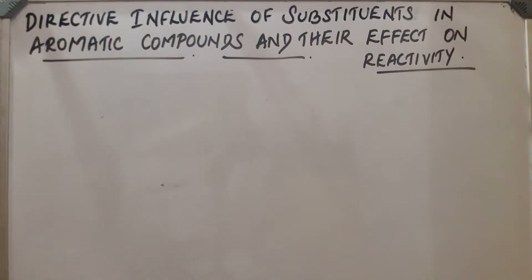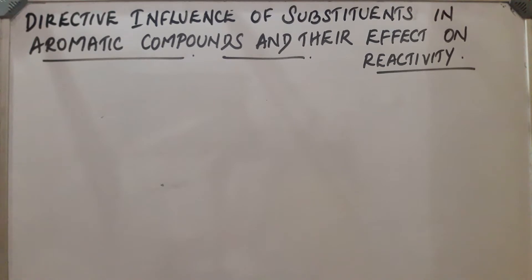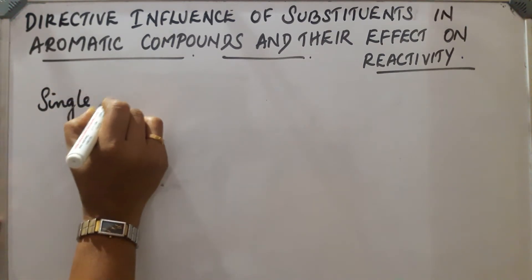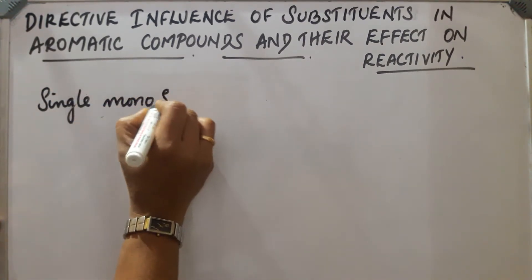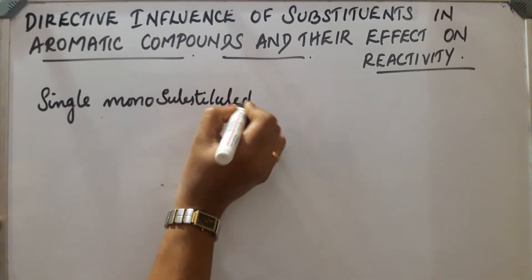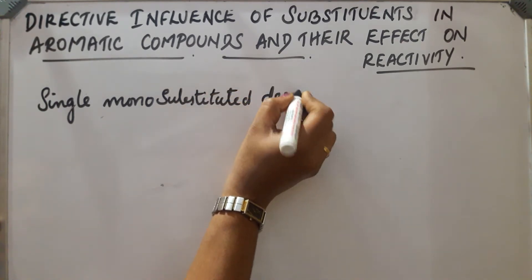Directive influence of substituents in aromatic compounds. Let us take benzene as an example. Benzene contains six carbon atoms and all six carbon atoms are equivalent. When it is mono-substituted, only a single mono-substituted derivative exists.